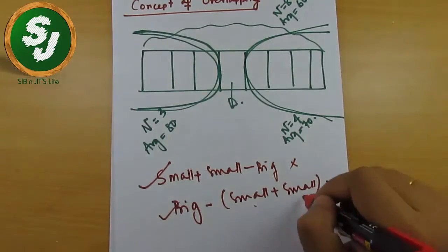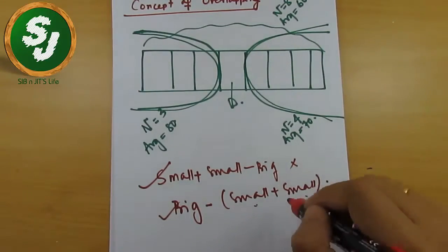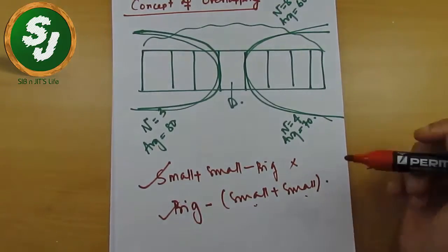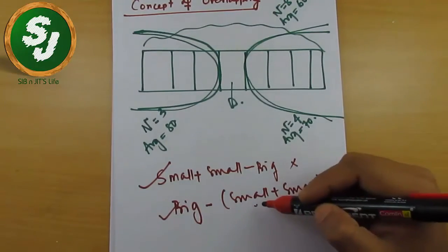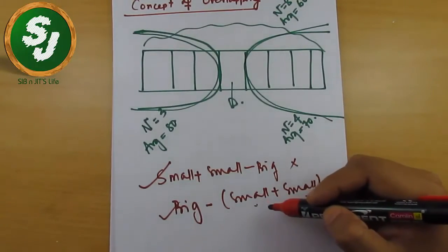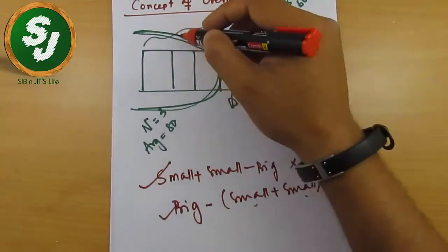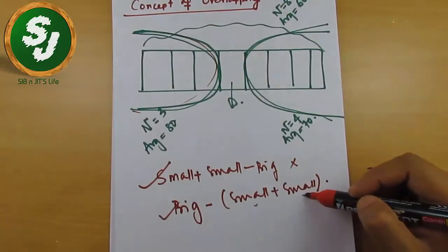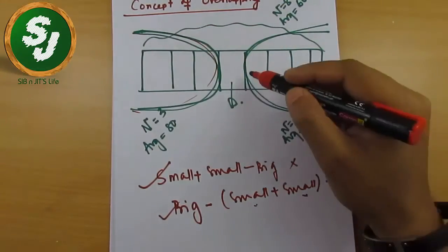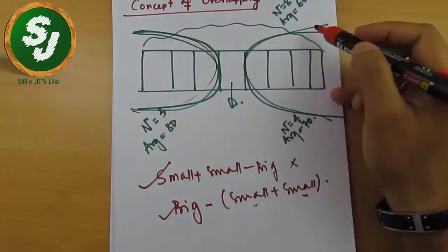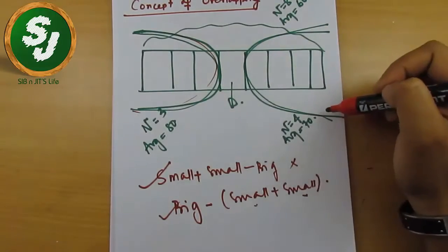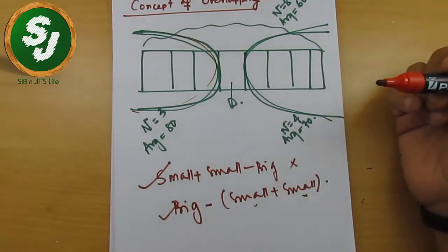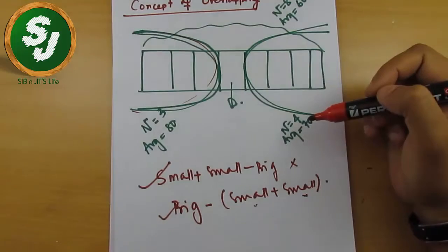Remember: first find both the small sums, add them together, then subtract from big. "Small" means the sum of numbers in the first small section, the second "small" means the sum of numbers in the second small section, and "big" means the sum of all the numbers. This is how it works.